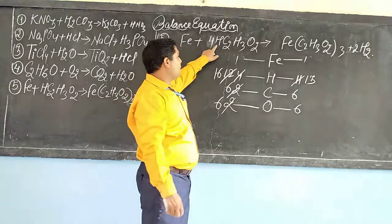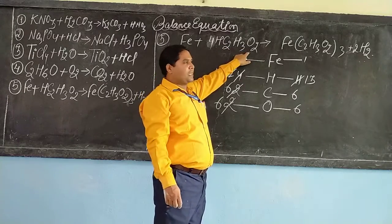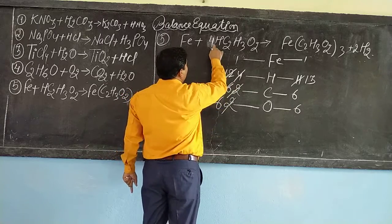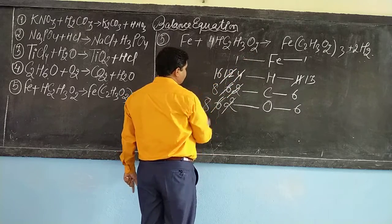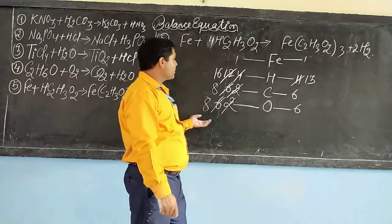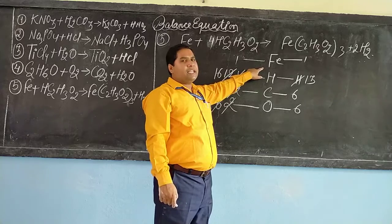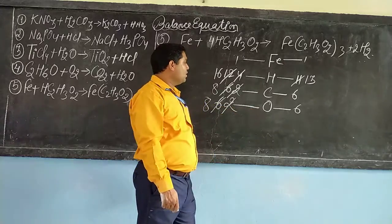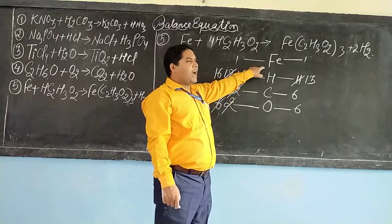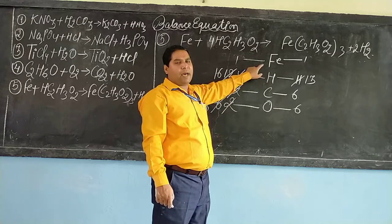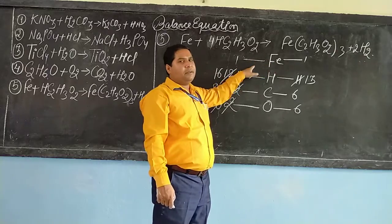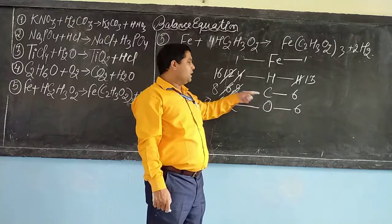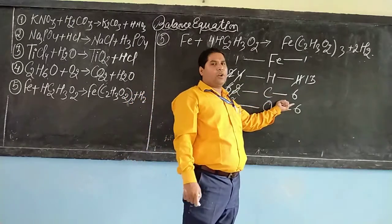At the same time the number of carbon and oxygen increased. 4 into 2 = 8, and oxygen 4 into 2 = 8. Now you see here, only iron has been balanced; hydrogen, carbon, and oxygen are not balanced. So once again we start from the carbon because iron is balanced — first we balance the metal and metal is already balanced. So carbon atoms in the reactant side: 8, whereas in the product side: only 6.